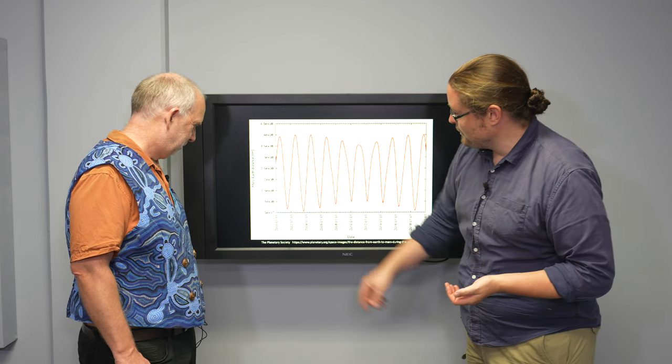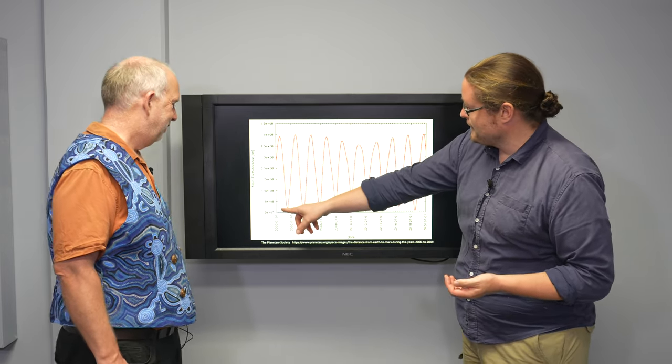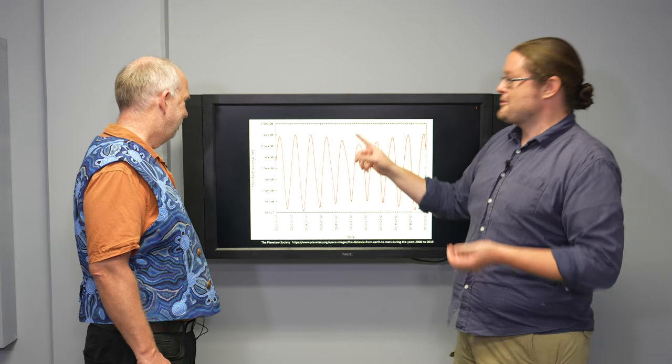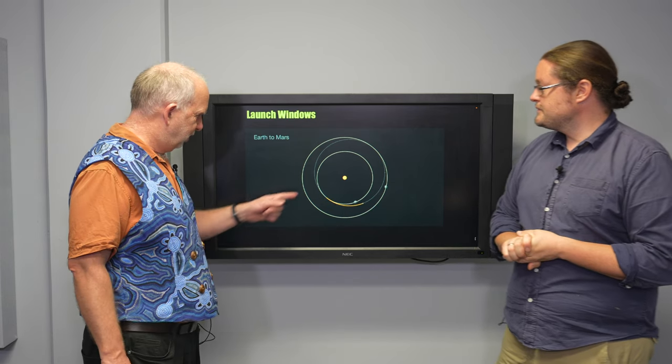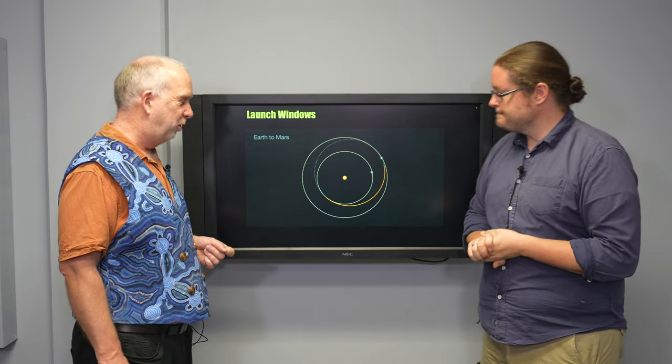Yeah, because this is in kilometres, right? So you're going from 50 million kilometres to 400 million kilometres. That's a lot of kilometre difference. Yeah. And the way you want to do it is the whole Hohmann transfer orbit that we've talked about before.